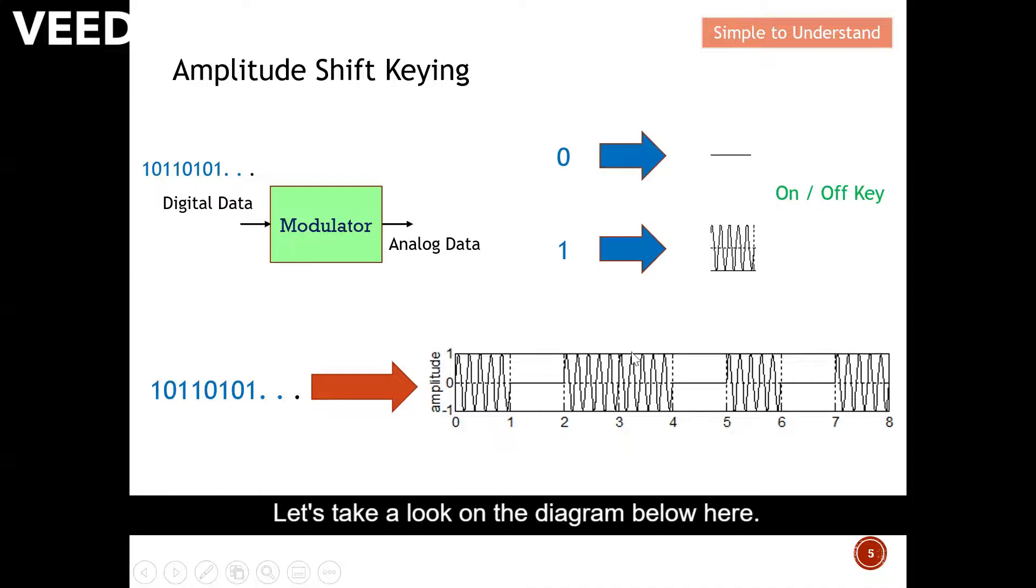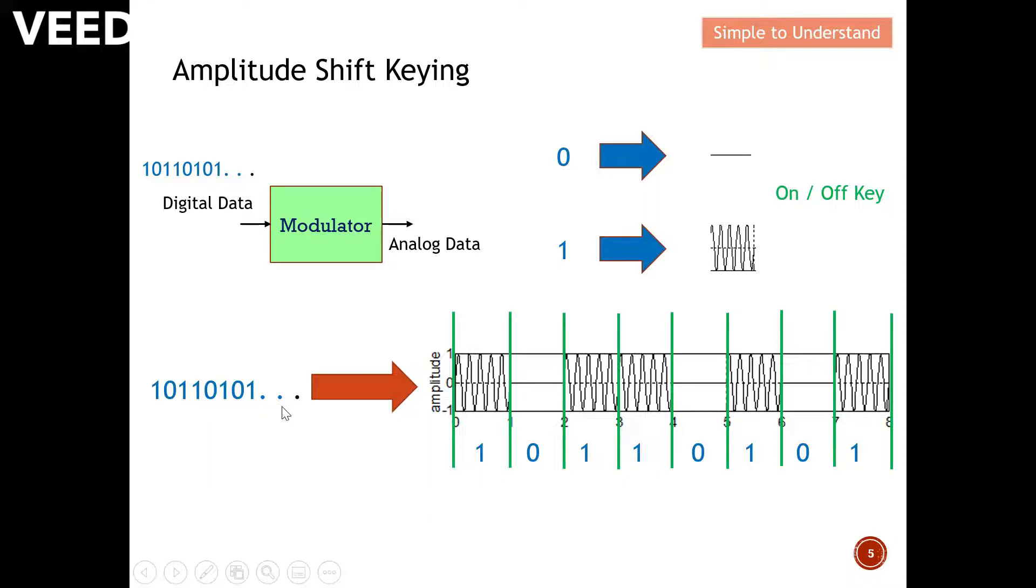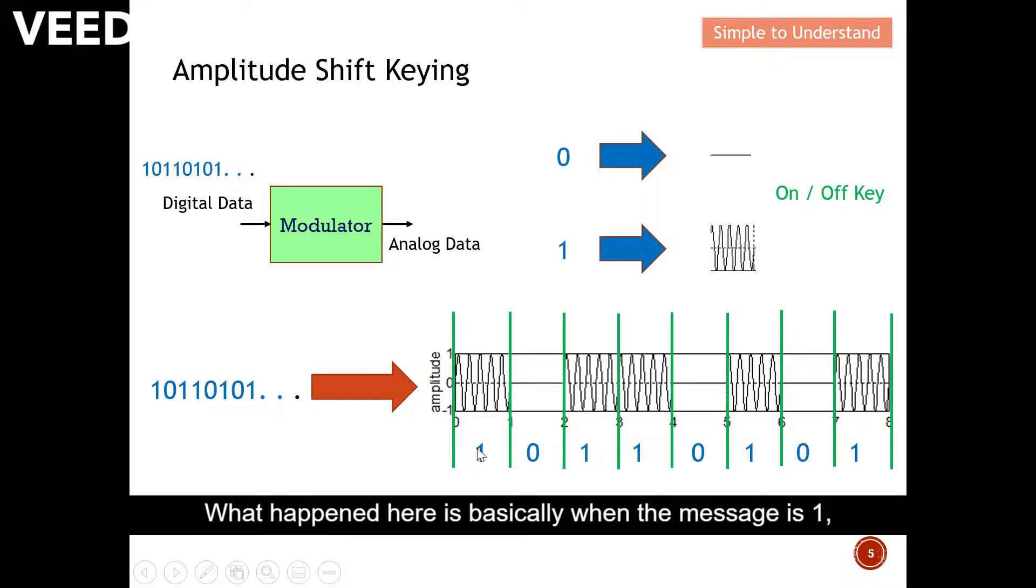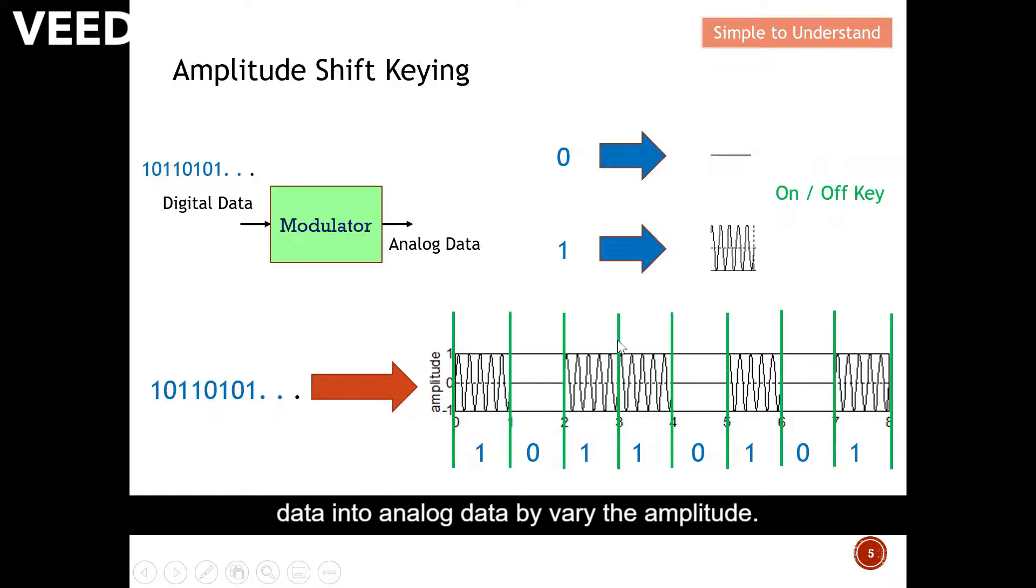Let's take a look on the diagram below here. So these are the string of data. So what happened here is basically when the message is one, I copy this waveform inside here. When the message is zero, I copy this waveform inside here. When it's a one, I copy this waveform inside and vice versa here. And from here, you can easily see how I actually can convert the digital data into analog data by varying the amplitude. So this is called amplitude shift keying.